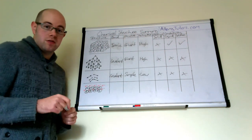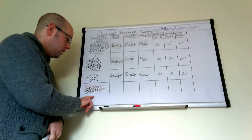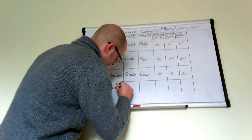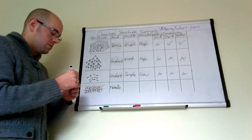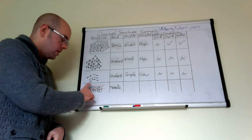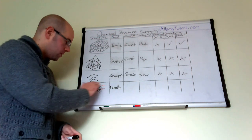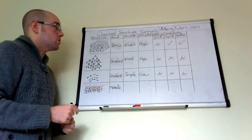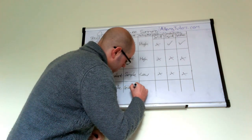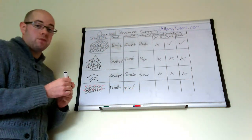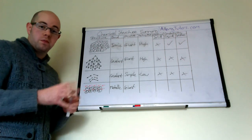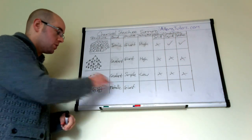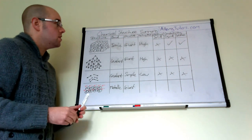The last one is metallic. This structure has positive metal ions in the middle with a sea of delocalized electrons. This structure is also giant — because we have a lot of positive ions in one area, forming a large structure — so we call it a giant metallic structure.